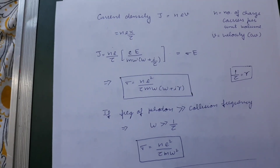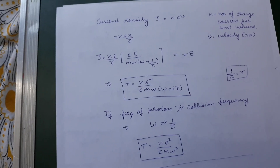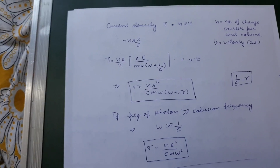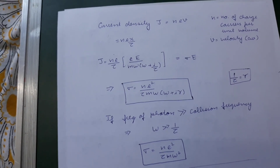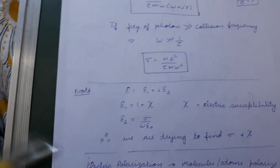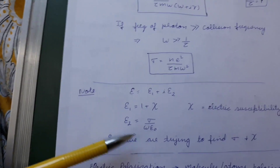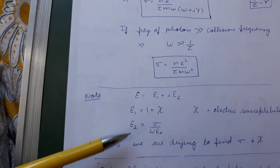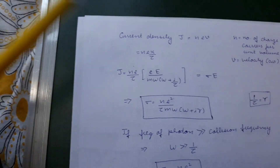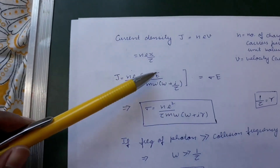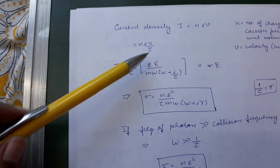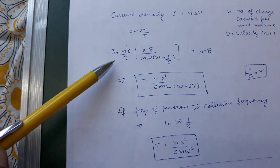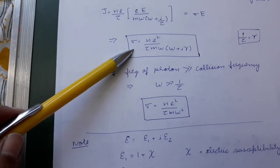We want to find the permittivity of a material, which has a real part and an imaginary part. The real part depends upon the electric susceptibility and the imaginary part depends upon the conductivity of the material. So before finding permittivity, we need to know what susceptibility and conductance are. The current density j is given by nev, where v is replaced by x divided by relaxation time. Replacing x from our earlier equation and applying Ohm's law (j = σE), we get an expression for conductivity.